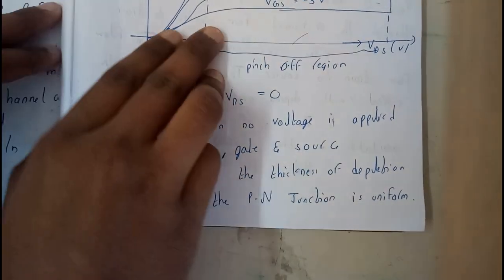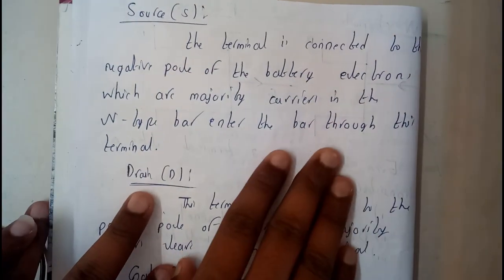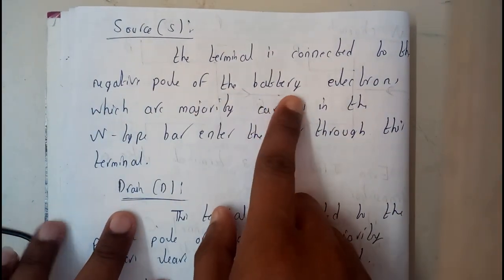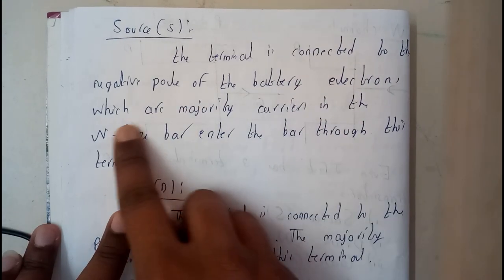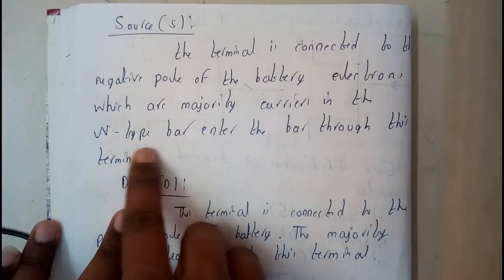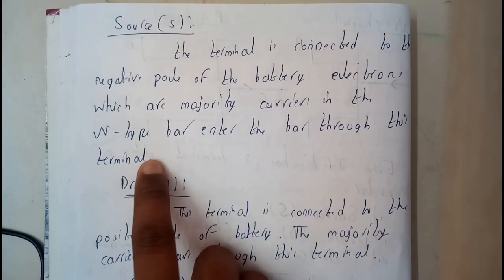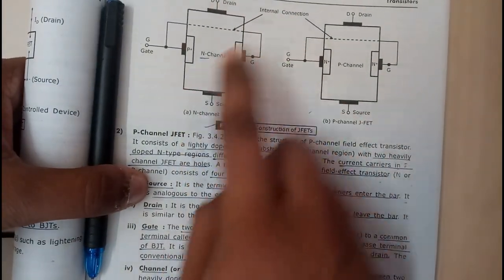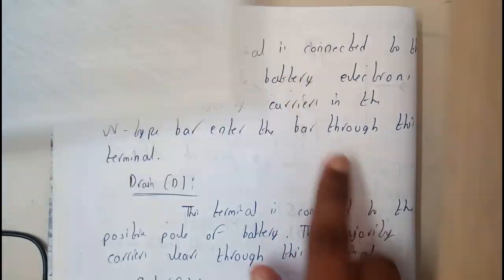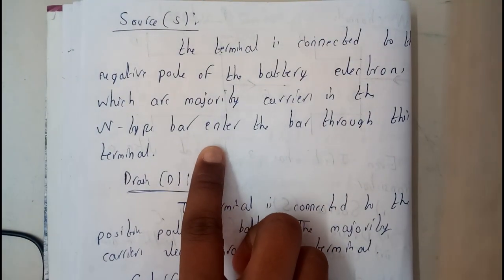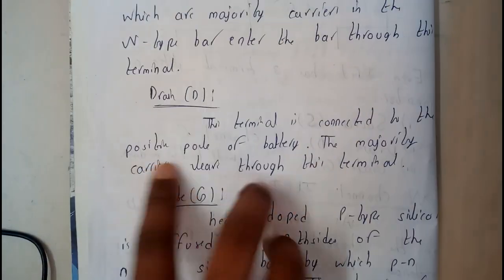Let us go through the points such as source - what is source, what is drain. Source: the terminal is connected to the negative pole of the battery. Electrons, which are majority carriers in the n-channel bar, enter the bar through the terminal. Source is connected on the down, so we give a forward bias for this - above positive and below negative. For source we are giving negative, so n to n forms the forward bias.